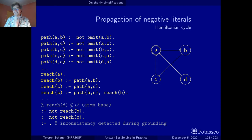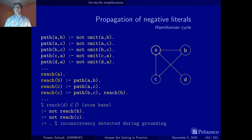This is a cute little example, but of course it's a lucky strike — it's rarely the case that the grounder can find out that your problem is inconsistent. On the other hand, there are logic programs that can always be completely evaluated by the grounder. These are the ones we look at next.